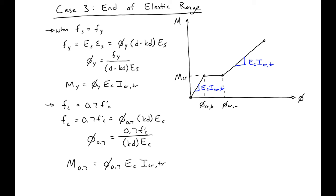We'll be able to see whether our steel or our concrete goes inelastic first by seeing whether our moment of 0.7 or our yield moment is greater. The lesser of those moments is the one that will cause our beam to go inelastic first.